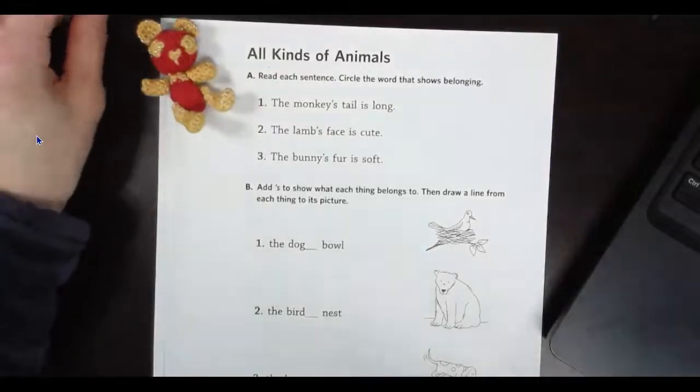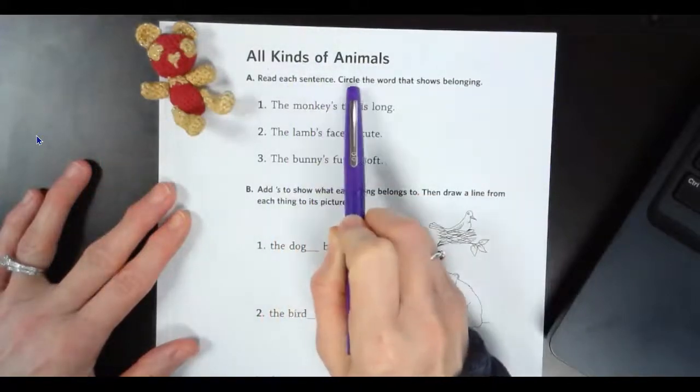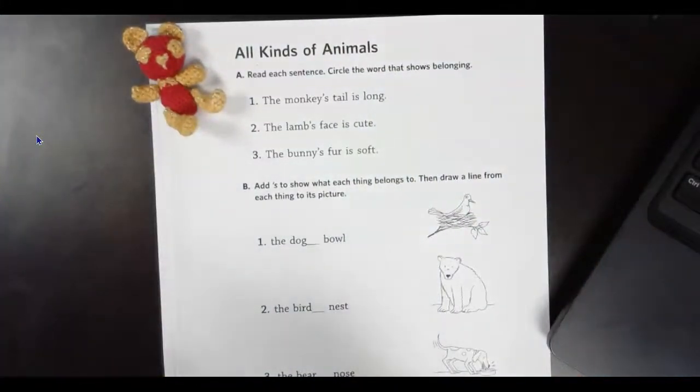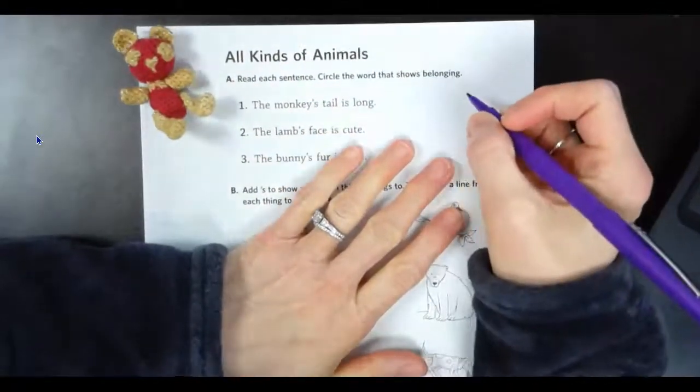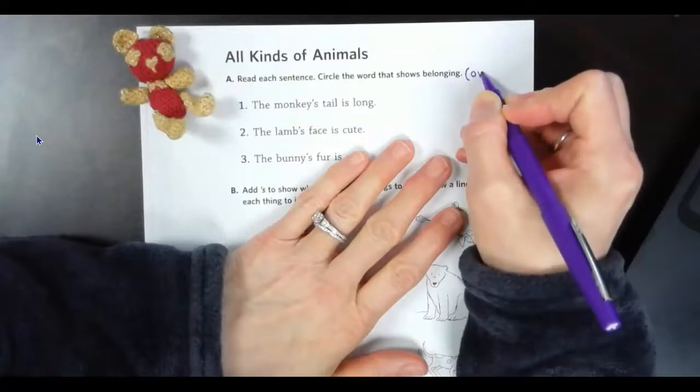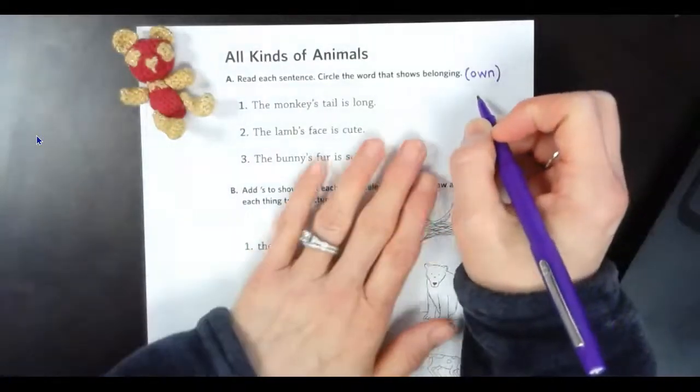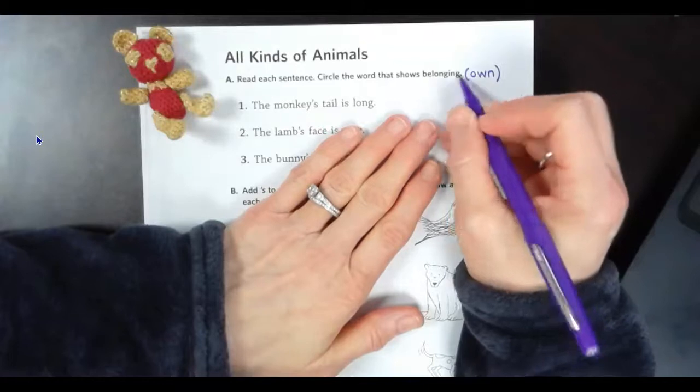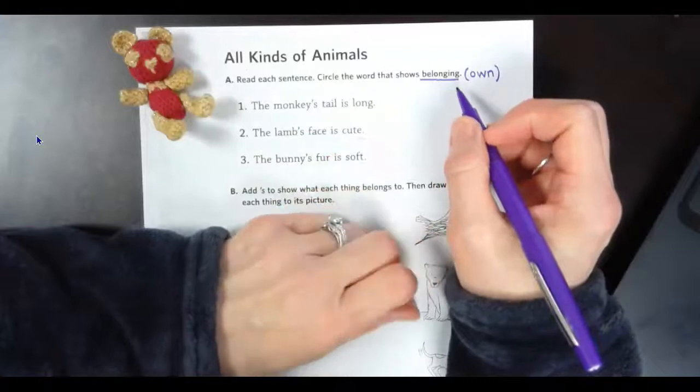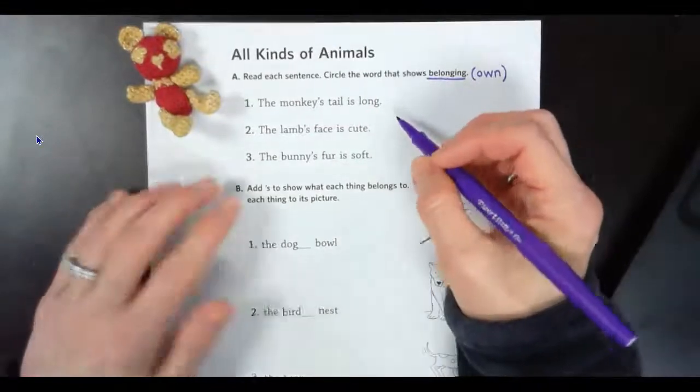All right, so the top says all kinds of animals. It says read each sentence, circle the word that shows belonging. And belonging means to own or possess. We'll just put the word own, O-W-N. We call these possessive nouns because the word possess means that you own it or it belongs to you. Okay? You have a lot of things at your house that belong to you, I'm sure. Like your pillow belongs to you. Hopefully you don't have to share your pillow with anybody.